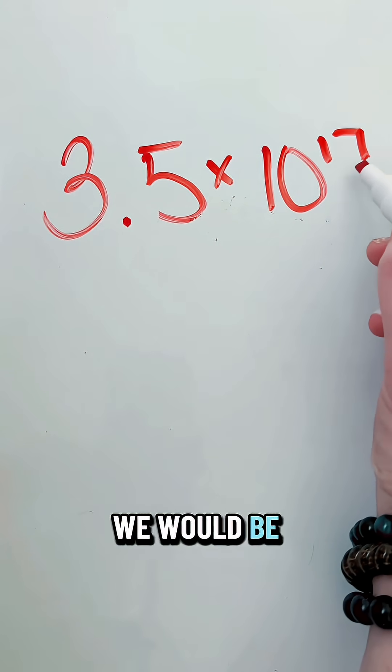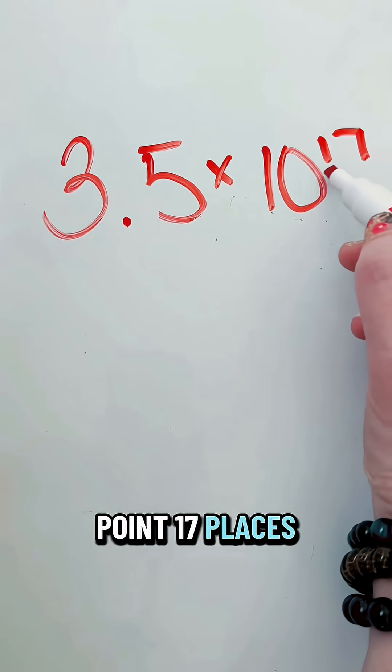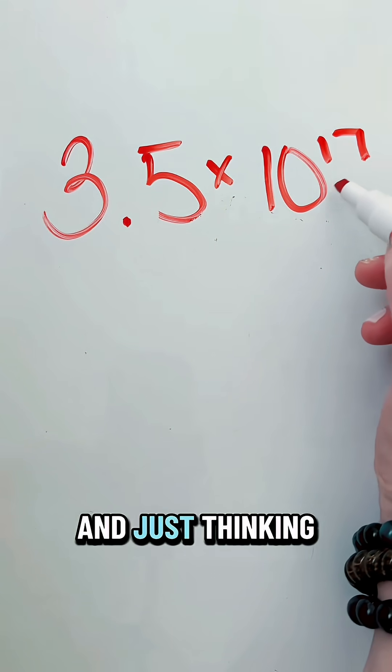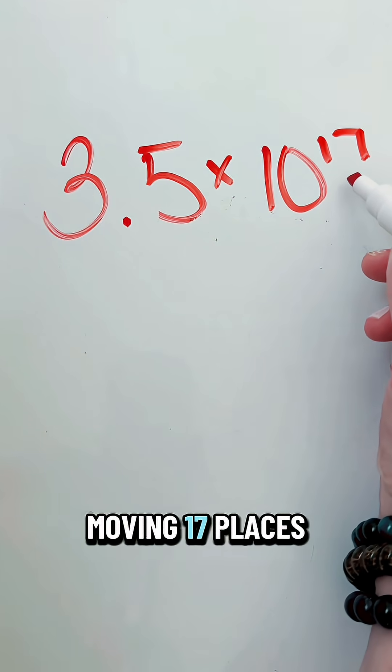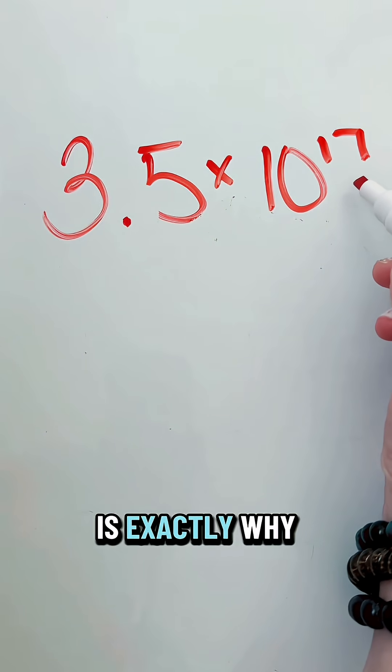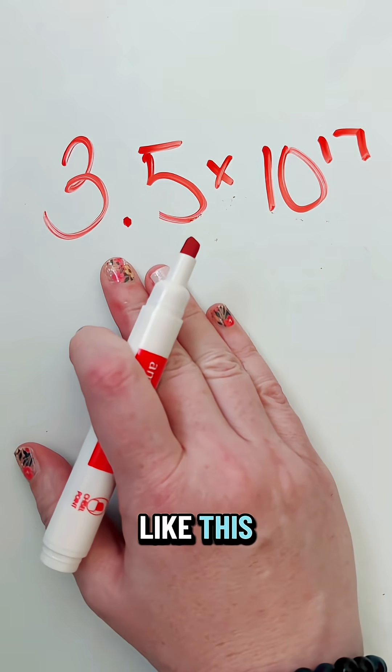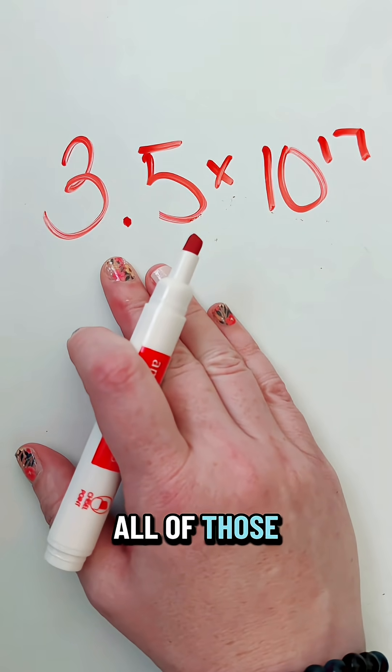For this example, we would be hopping our decimal point 17 places to the right. And just thinking about that, moving 17 places to the right is exactly why we write it like this instead of writing all of those zeros.